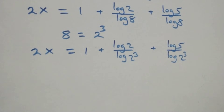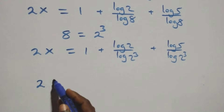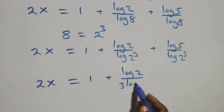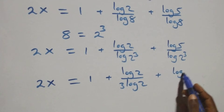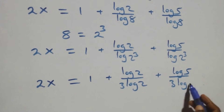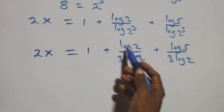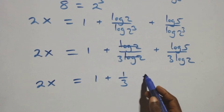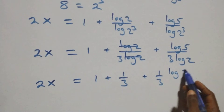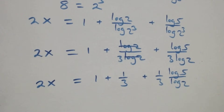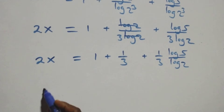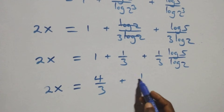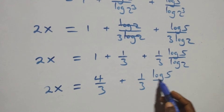Which implies here: we apply the power log rule. The 3 comes down, and this becomes 2x equals 1 plus log 2 over 3 log 2, plus log 5 over 3 log 2. From here we have 2x equals 1 plus 1 over 3, times log 5 over log 2.